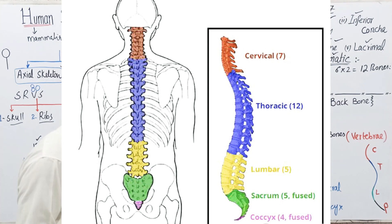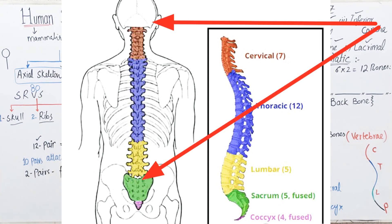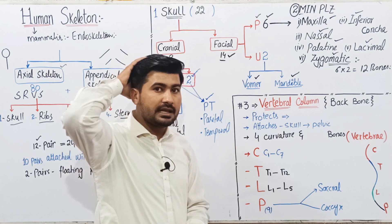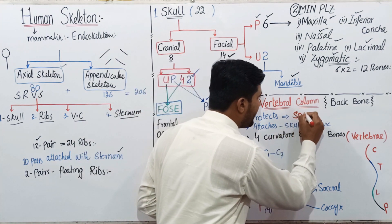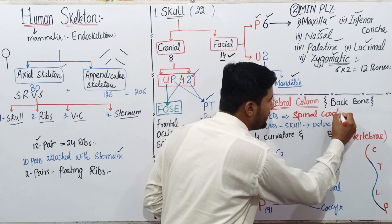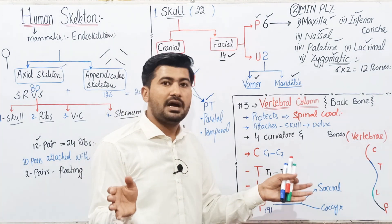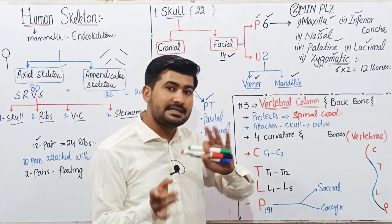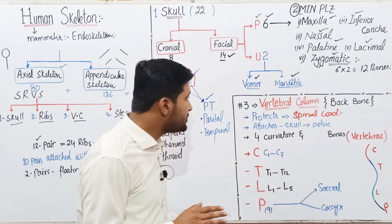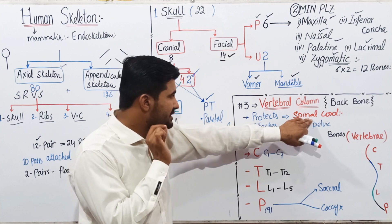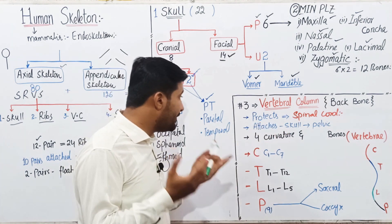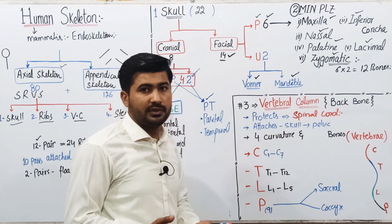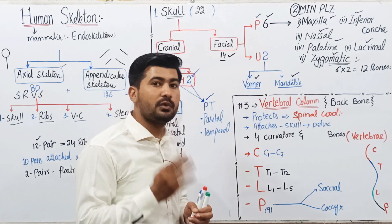The vertebral column or backbone connects the skull with the pelvic region. Its function is to protect the spinal cord, which is an extension of the medulla oblongata connecting the central nervous system with the peripheral nervous system. The vertebral column also has four curvatures, which you can memorize using CTLP: C for cervical, T for thoracic, L for lumbar, and P for pelvic.